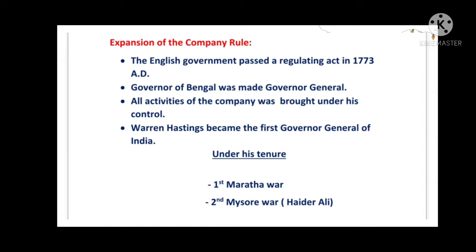We are now going to start our next topic, that is the expansion of the company rule. In the year 1773 AD, a Regulatory Act was passed by the English government. It was about making the Governor of Bengal the Governor General of India. The Governor of Bengal at that time was Warren Hastings. Along with that, he got direct control over the trade and political activities of the company, and the councils of Mumbai and Madras governors were also under his control.